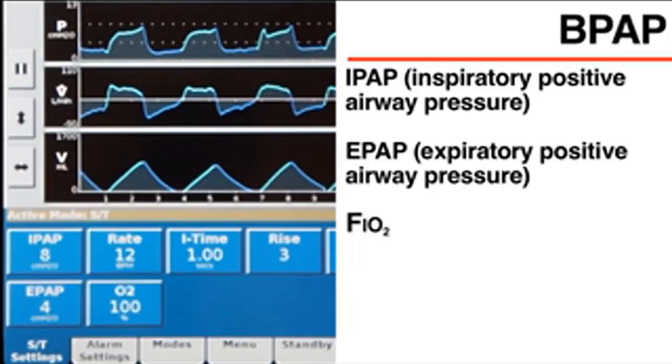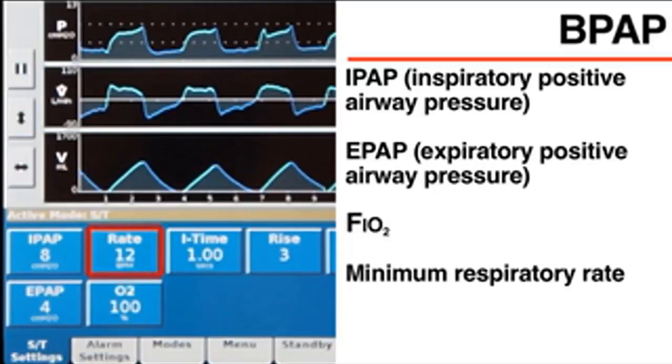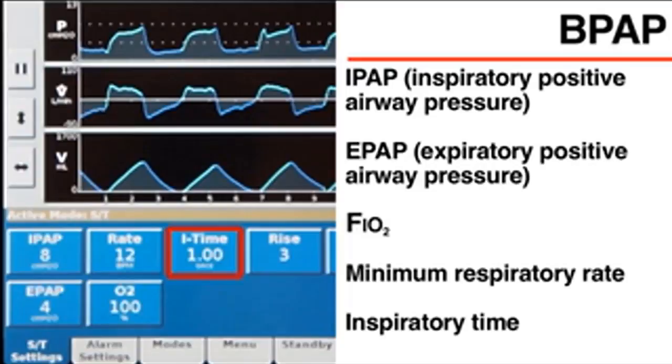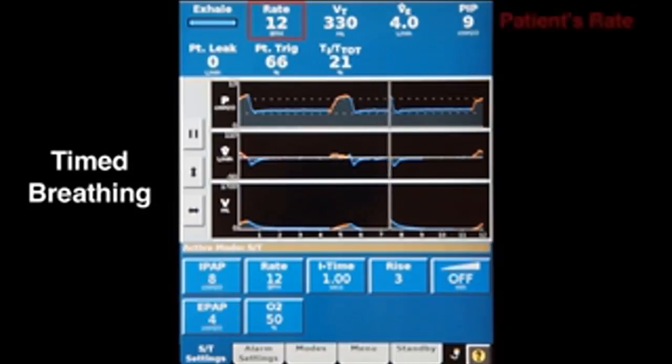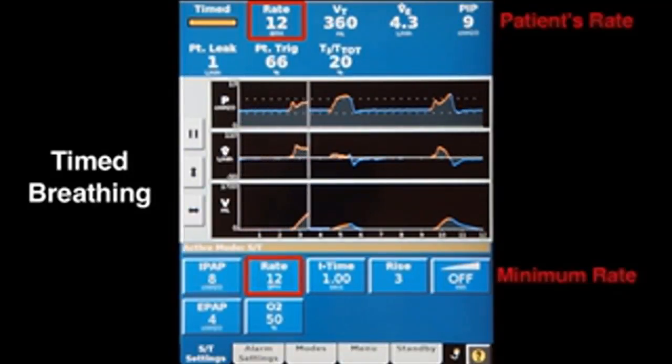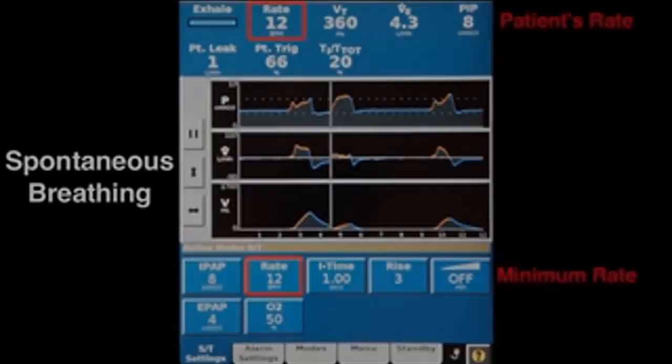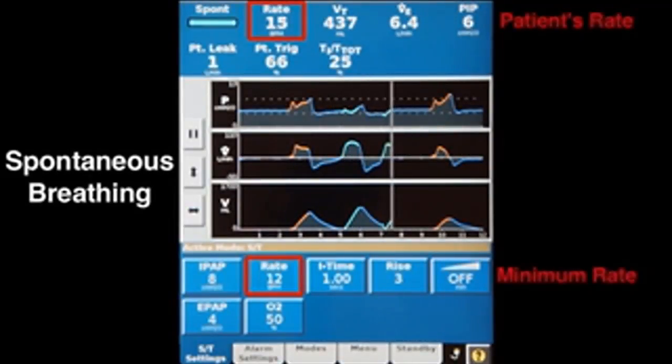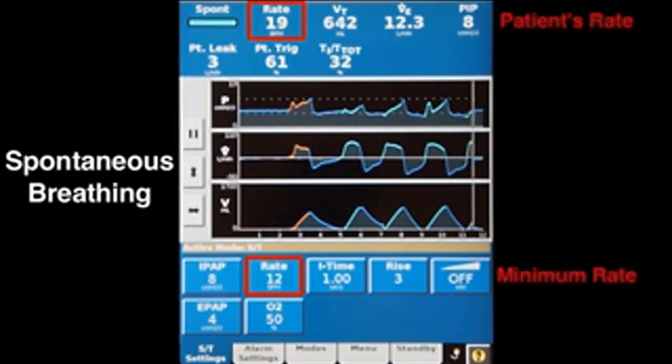BPAP is most often delivered in the combination spontaneous and timed, or ST, mode, in which the settings also include the minimum respiratory rate and the inspiratory time, or I-time. If the patient's respiratory rate is slower than the minimum rate, the ventilator triggers the additional breaths at regular intervals, delivering IPAP for the duration of the I-time. If the patient's respiratory rate is faster than the minimum rate, the patient triggers all breaths, and the ventilator delivers IPAP whenever spontaneous inspiration is detected.